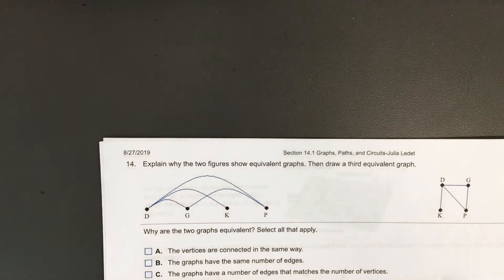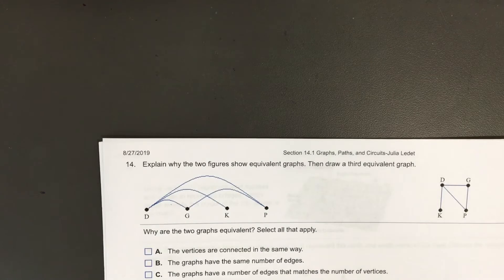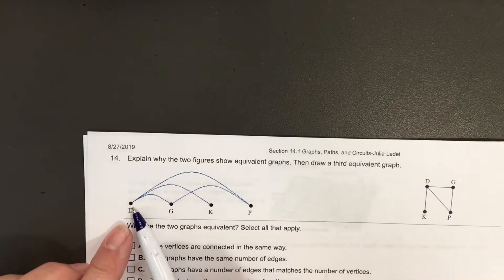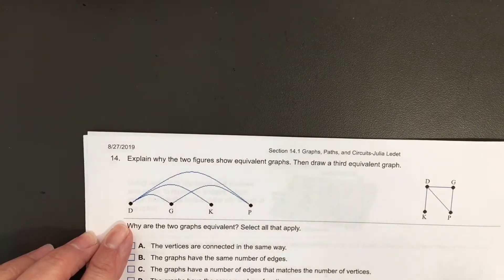For problem 14, they want us to explain why these two graphs, the one on the left and the one on the right, are equivalent. They're equivalent if they have the same vertices connected in the exact same manner.